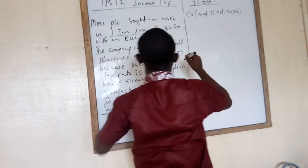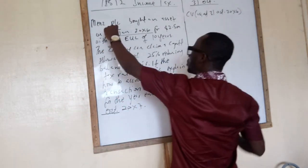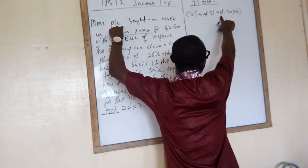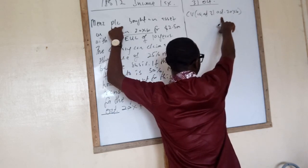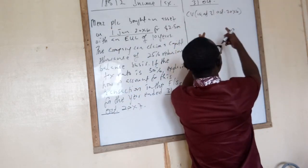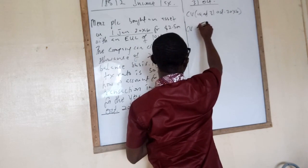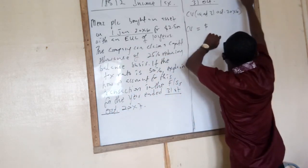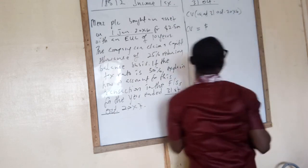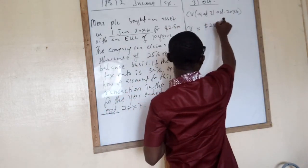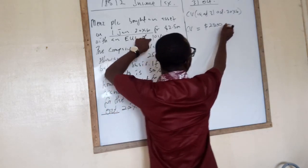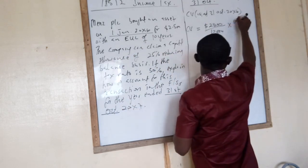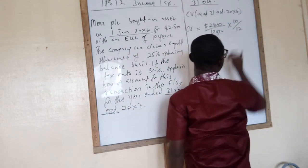So how do we go about that? If the asset was bought in January and we are in October, how many months is that? 10 months. So if we are at 10 months, the current value of this asset will be equal to — all workings are in 1000 — so that becomes 2500 divided by the estimated useful life of 10 years, times 10 months over 12 months.